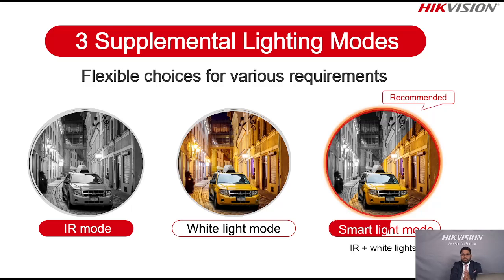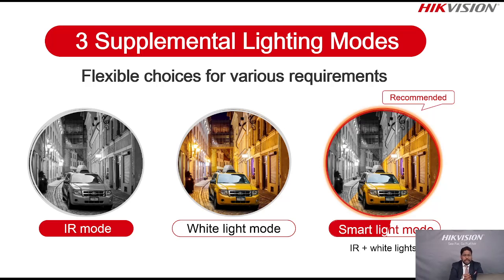The first mode is the IR mode. As we all know, a normal camera in IR mode gives a black and white image at night. If you need a brighter image at night, there is a White Light mode available where the white light will work continuously for you. You can switch this on and the camera will continuously provide white light.